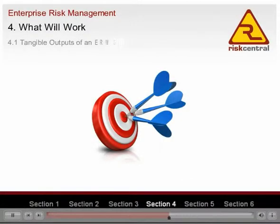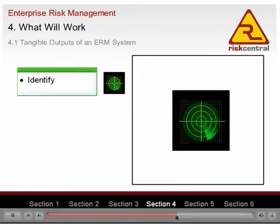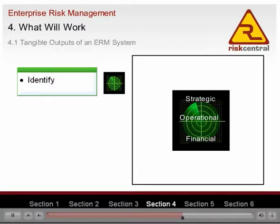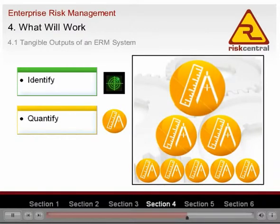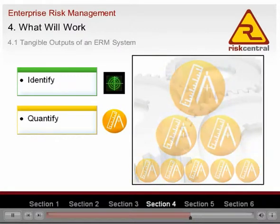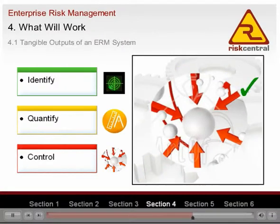The objective of a risk management system should be to ensure that all significant risks to business objectives are identified, including strategic risks, operational risks, and financial risks. Risks are prioritised based on size, and resources are allocated to manage them appropriately. The best controls are selected and implemented to cost-effectively reduce risks to acceptable levels.